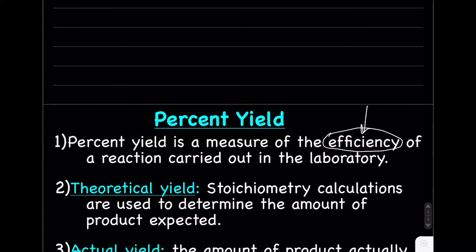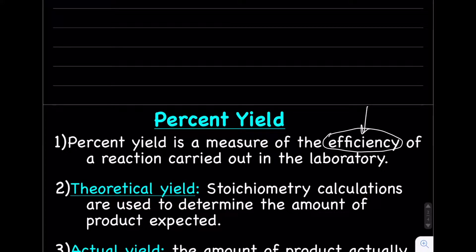Theoretical yield is what products you would make in a perfect world. We figure out our theoretical yield using stoichiometry calculations — we know the amount of reactant we started with, and we calculate the amount of product we expect to get. This does not take into account any error, so it's like the perfect world.